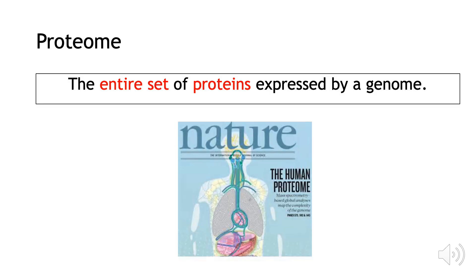The proteome is defined as the entire set of proteins expressed by the genome. You will remember from higher biology that the genome of an organism is its entire hereditary information that's encoded in a molecule called DNA. A genome is made up of genes that code for proteins and other DNA sequences that don't code for proteins. So the proteome is all of the proteins made by the genetic code known as the genome.